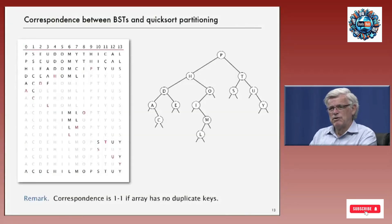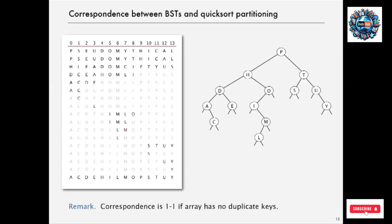Binary search trees correspond exactly to quicksort partitioning. In a BST, the root node has everyone smaller to the left and everyone larger to the right. In quicksort after a random shuffle, the partitioning element divides the array so each side is processed independently. There's a direct one-to-one correspondence — assuming no duplicate keys — between what happens in quicksort and in binary search trees.